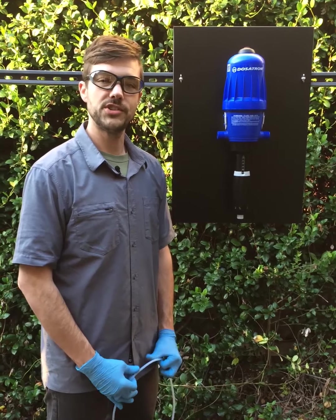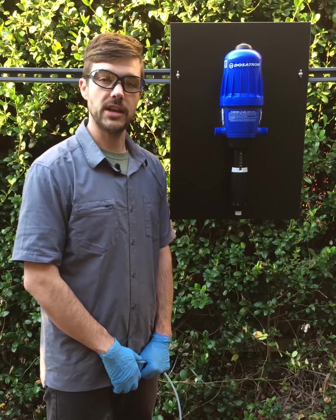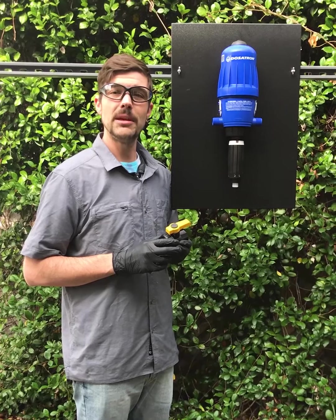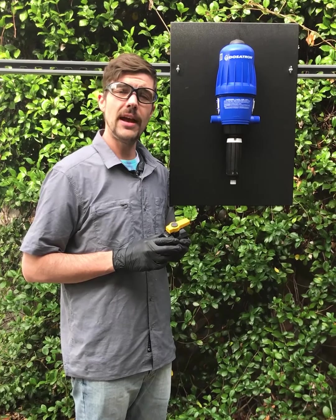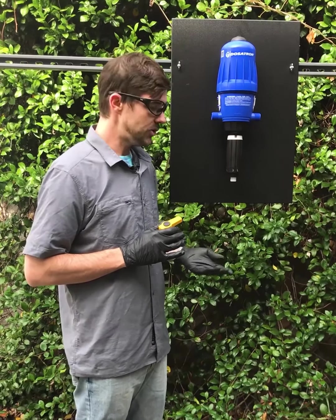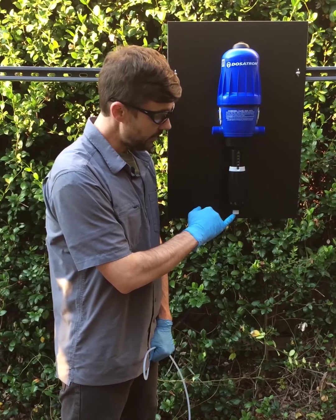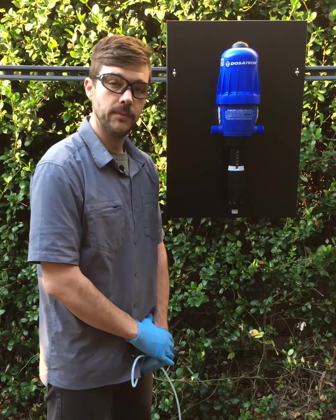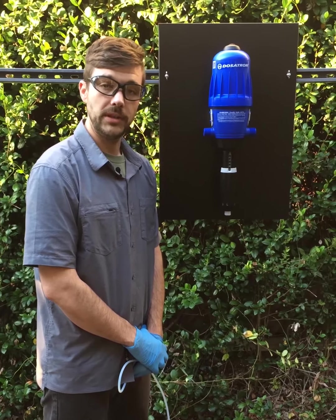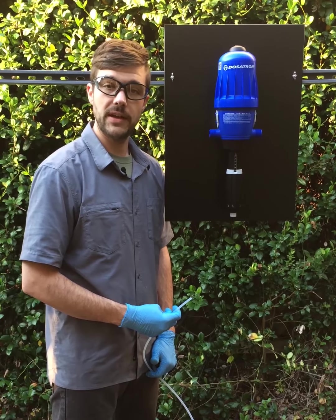Now that we've reinstalled our check valve, turn the unit on and let it run to check for any leaks. At this time, it may be beneficial to shut a valve downstream from the unit to apply back pressure on your system to help check for any drips or leaks. If you notice any leaks coming from the check valve assembly, it is a good time to replace it.